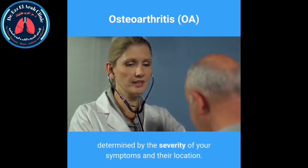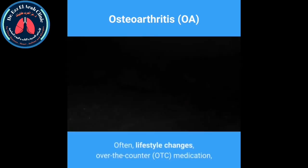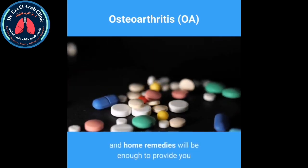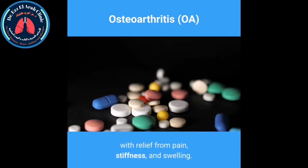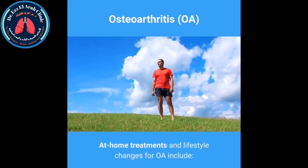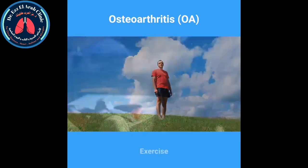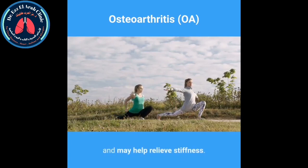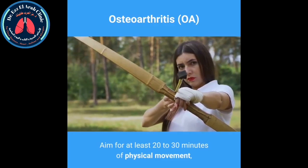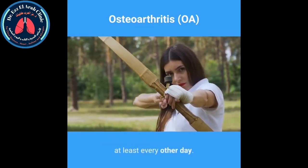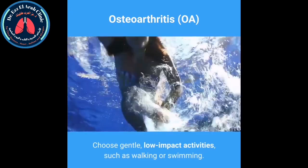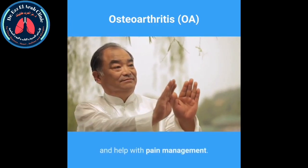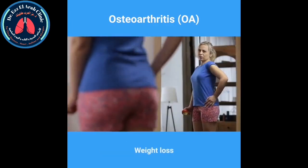Osteoarthritis treatment. OA treatment is centered upon symptom management. The type of treatment that will help you the most will largely be determined by the severity of your symptoms and their location. Often, lifestyle changes, over-the-counter (OTC) medication, and home remedies will be enough to provide relief from pain, stiffness, and swelling. Exercise and physical activity strengthen the muscles around your joints and may help relieve stiffness. Aim for at least 20 to 30 minutes of physical movement at least every other day, choosing gentle low-impact activities such as walking or swimming.